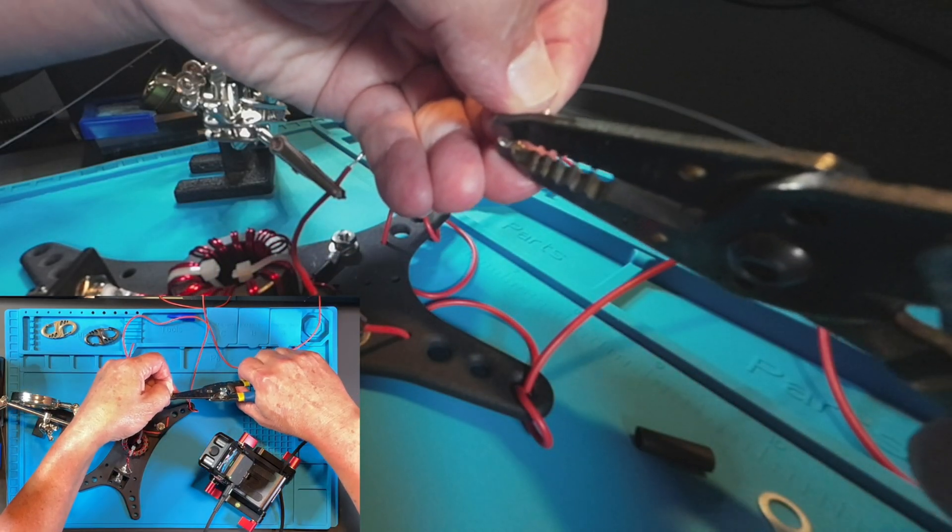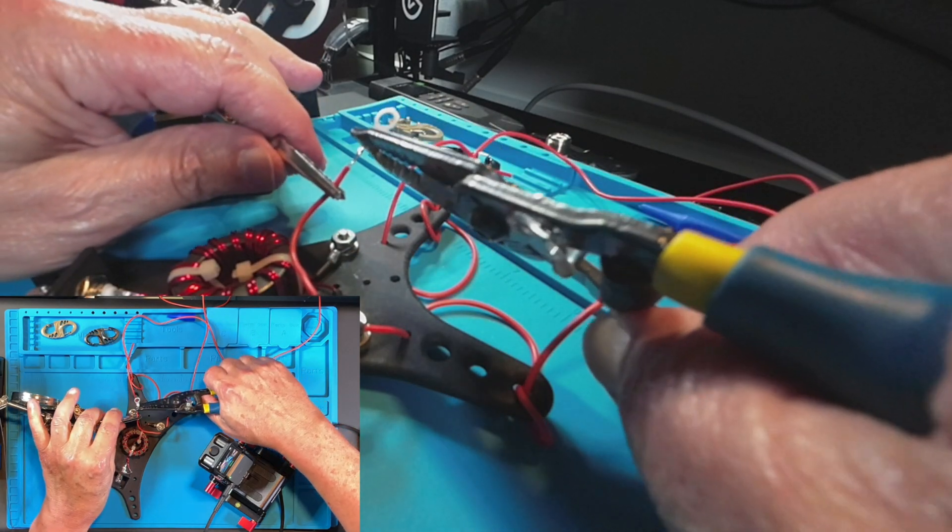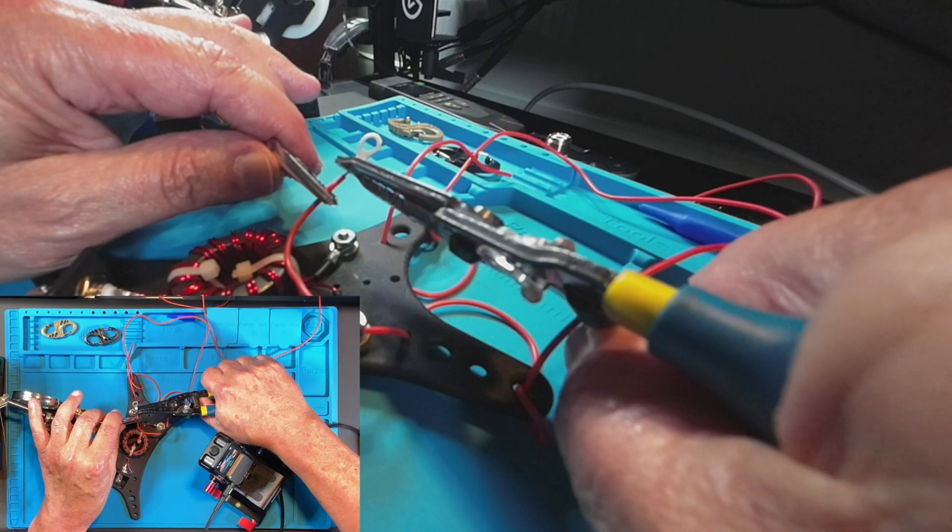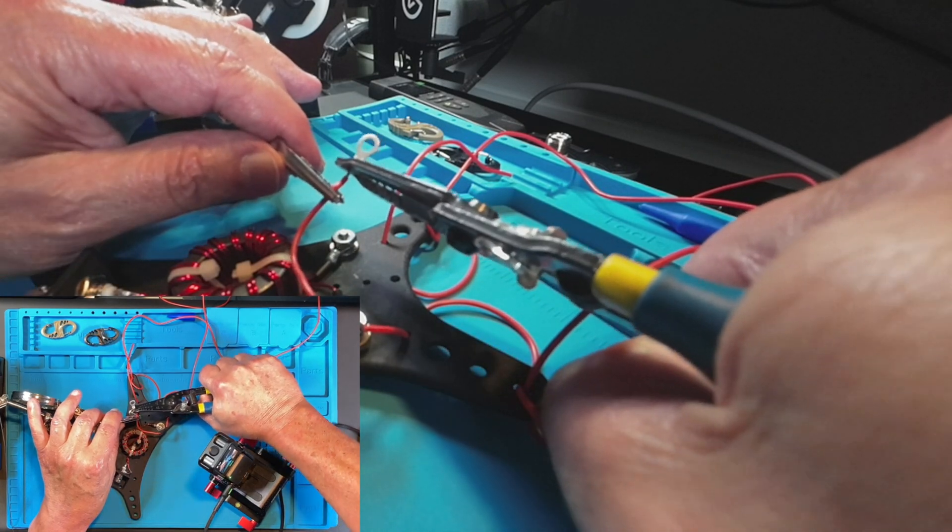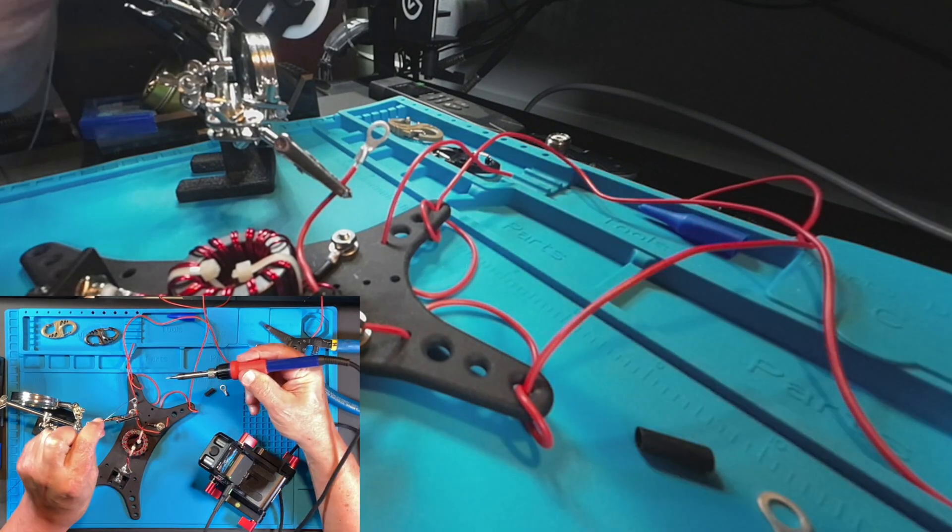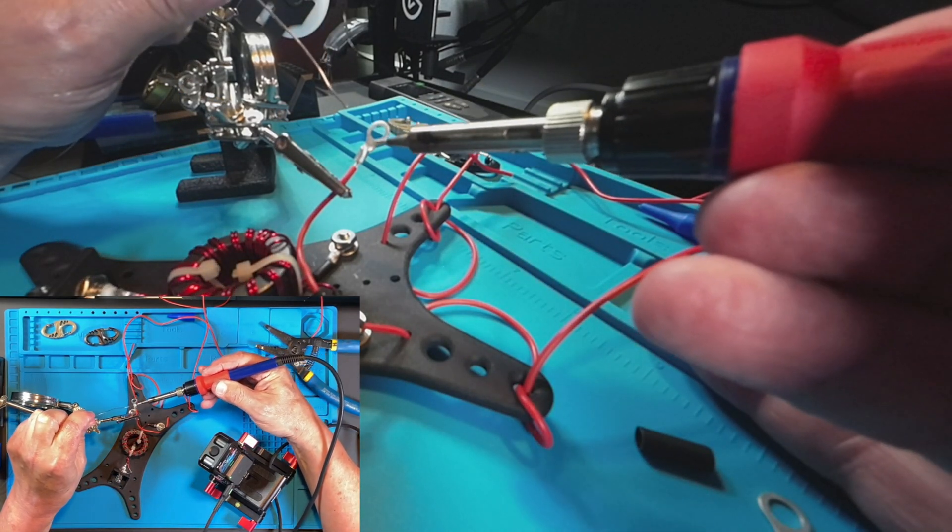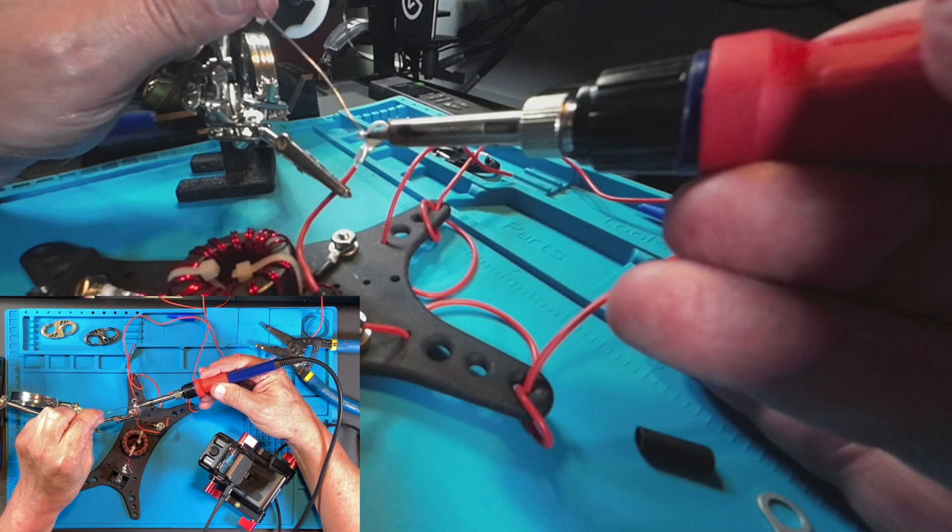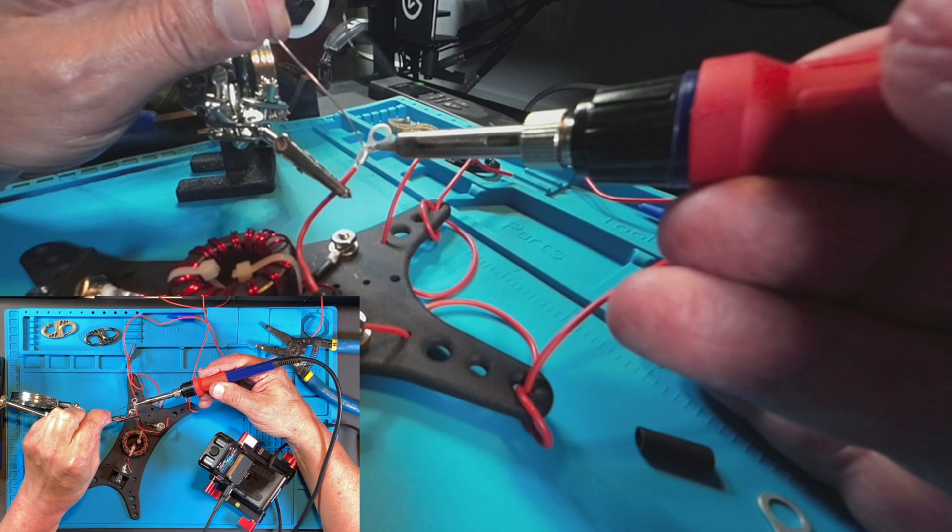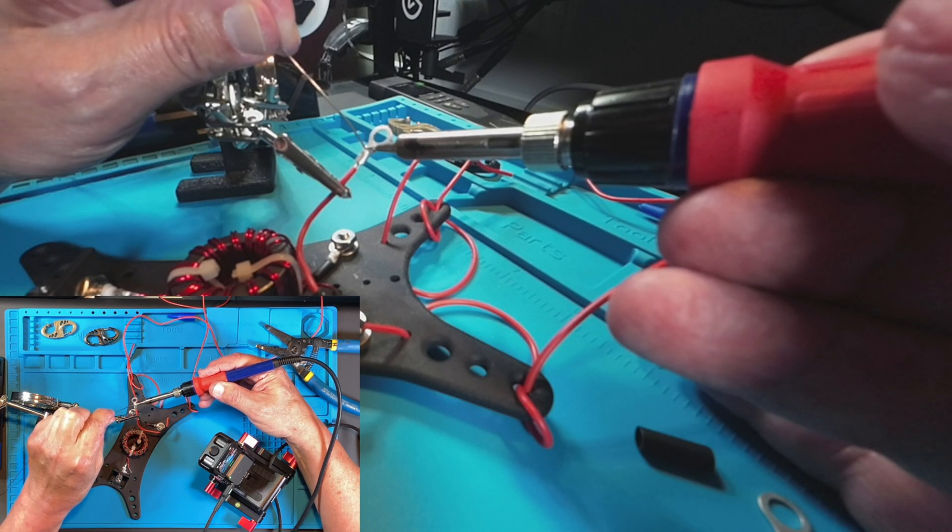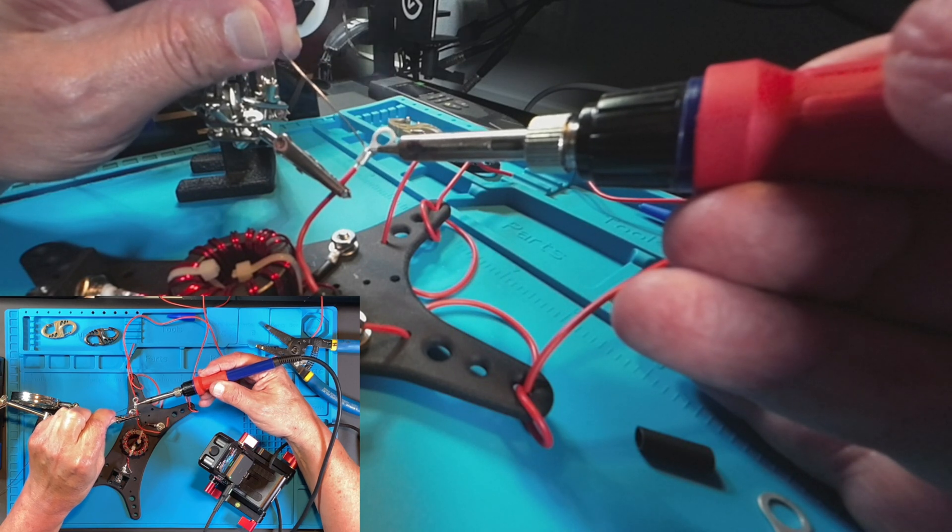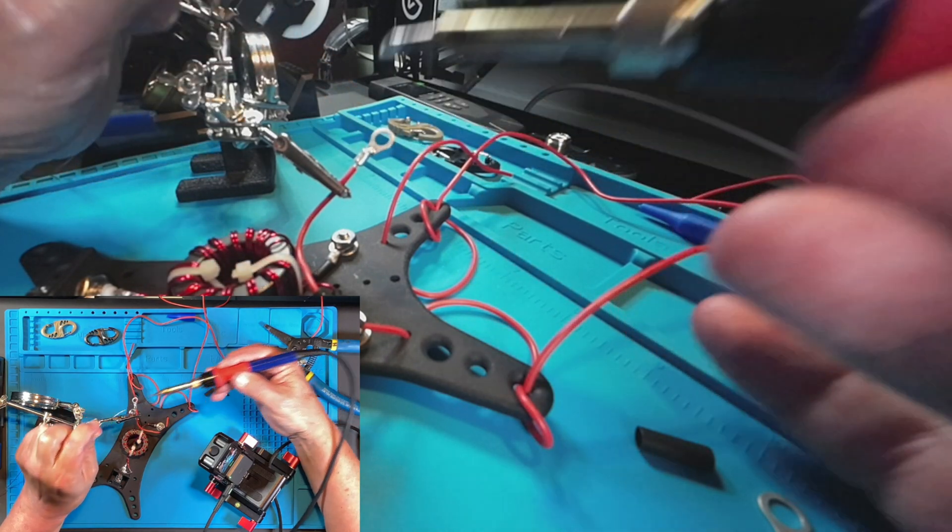Grab your ring terminal. Get it ready in your crimper. Insert it over the wire, which will not fray. And crimp. Solid. Solder. Perfect.